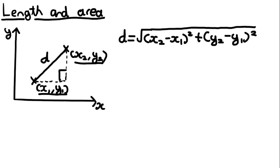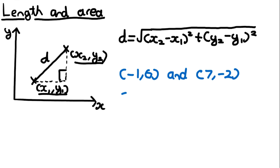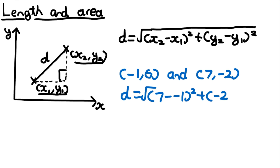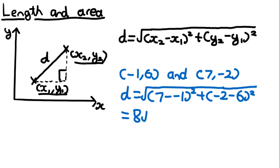Let's take an example. Let's say we're given two points: minus 1, 6 and 7, minus 2. To find the distance between these two points, it will be the square root of (7 minus minus 1) squared plus (minus 2 minus 6) squared. If you put this into a calculator, you'll find that the answer is equal to 8 root 2.